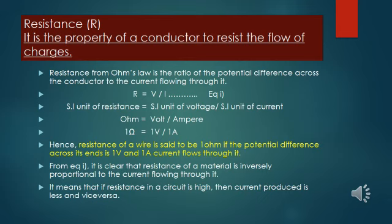It is clear that the resistance of a material is inversely proportional to the current flowing through it. More is the hindrance offered to the flow of charge, less is the amount of current produced in the circuit. That means if the resistance in a circuit is high, then the current produced is less and vice versa.